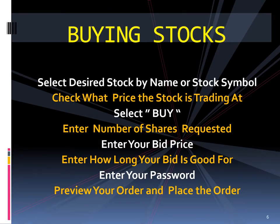To buy a stock on your investment dealer's website, find a button called Trading. You click on it and another menu will appear giving you a choice of buy or sell. After clicking on the Buy button, you will be asked what you want to buy — you choose Stocks. A new screen appears where you type in what stock you want by either stock symbol or by name, and the stock appears in a window for you to select.